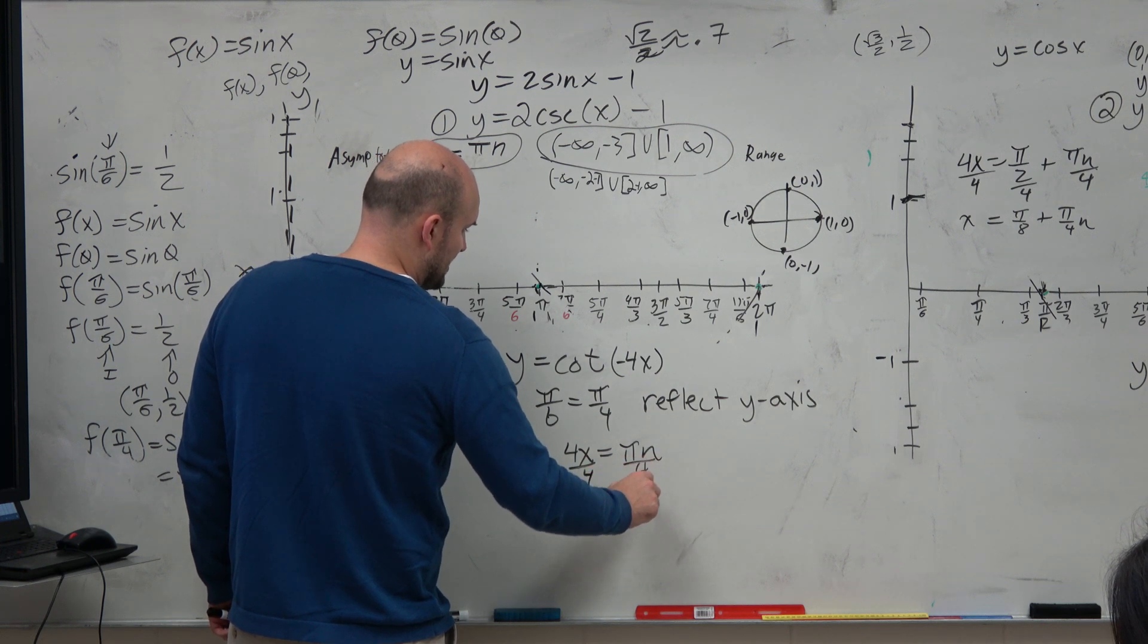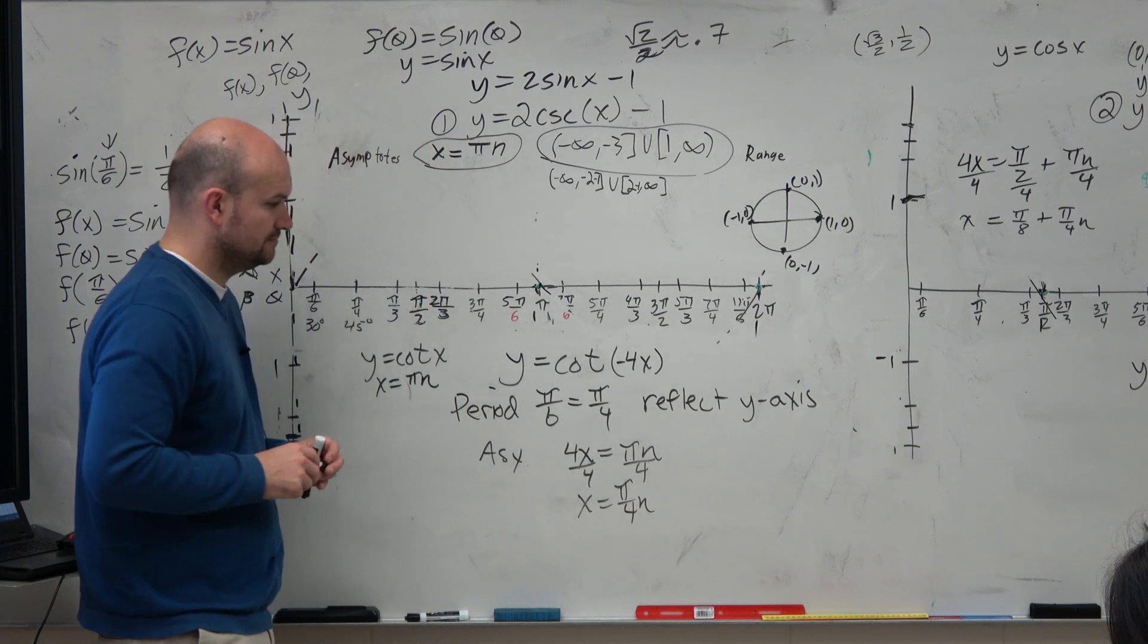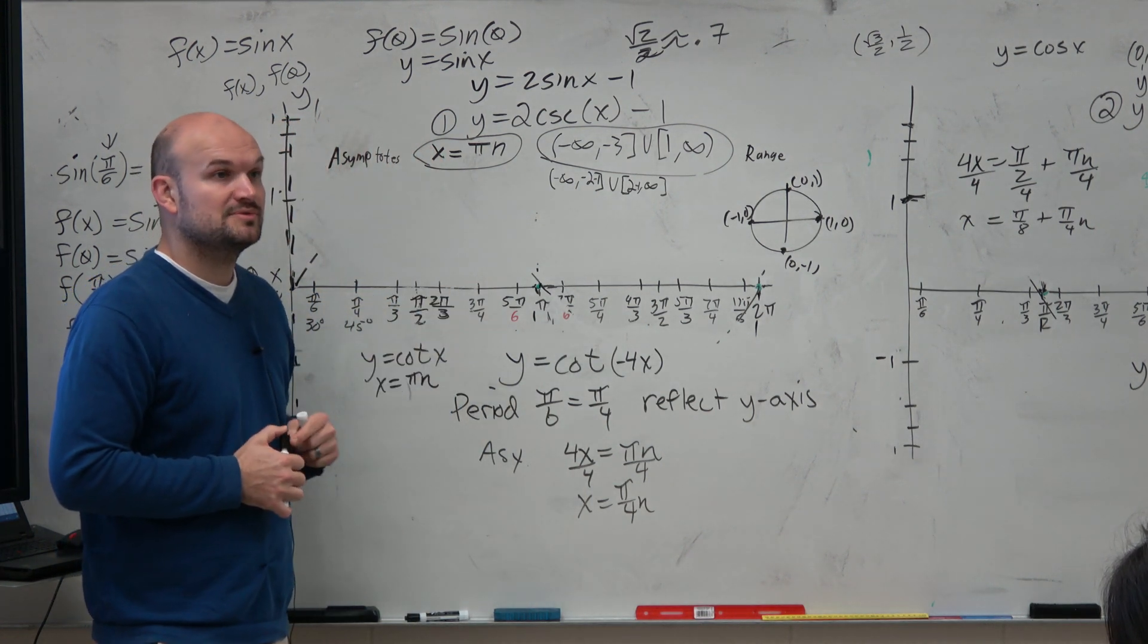Divide by 4, divide by 4, x equals pi over 4 n. So that's where my asymptotes are going to be.